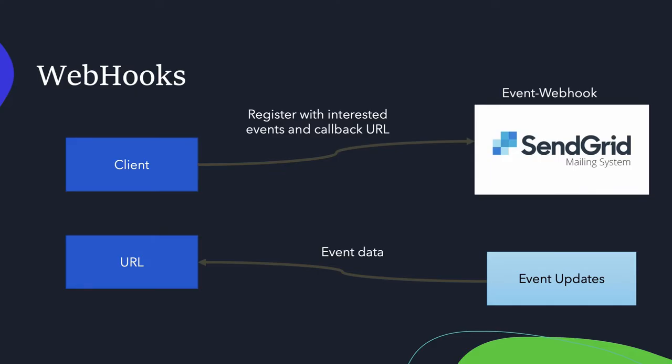SendGrid is a good example of a webhook provider — they're basically a mailing system. If you've used SendGrid to send emails, you can register with their email events webhook to know whenever an email bounces. That's a lot better than having to poll for each email sent out. Your system might need to send thousands of emails, but maybe only a handful actually bounce, and you end up being far more efficient by using webhooks, both on the client side and on the server side.